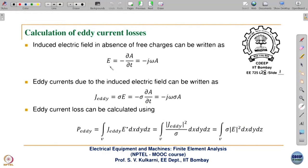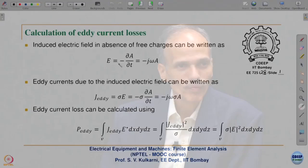The induced electric field intensity in the absence of free charges is E = -∂A/∂t. The complete expression is E = -∇V - ∂A/∂t, but -∇V equals zero because there is no charge accumulation — only currents are present, either free or induced. There is no accumulation of charges, unlike a capacitor where charges accumulate. So the -∇V term is zero.